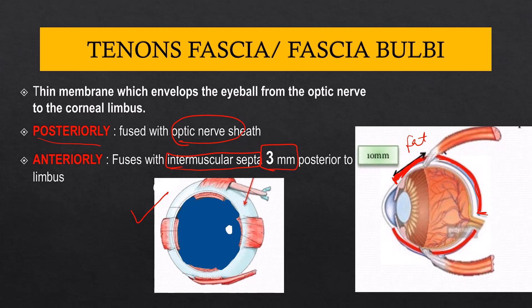Tenon's fascia is surgically important: the muscles insert onto the sclera, so to reach a muscle during surgery you must incise the conjunctiva, then find and dissect through the Tenon's capsule, then pass through the intermuscular septum before finally reaching the muscle itself. This is the essential plane of dissection in extraocular muscle surgery.